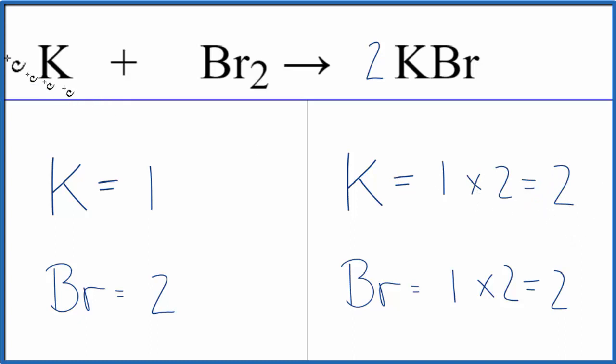That's pretty easy to fix though, because I could change my coefficient here to two. One times two, that'll give me two. So now these are the same, and these are the same.